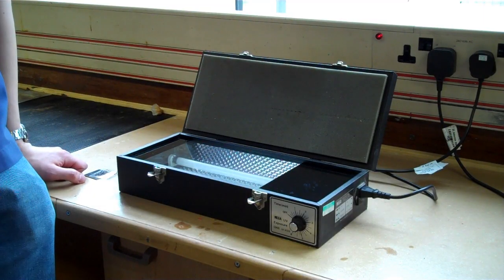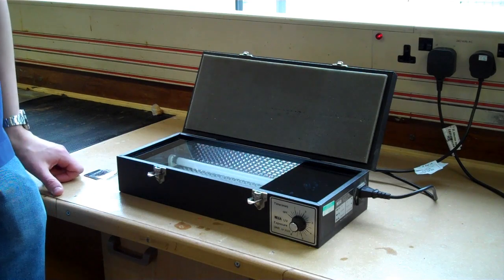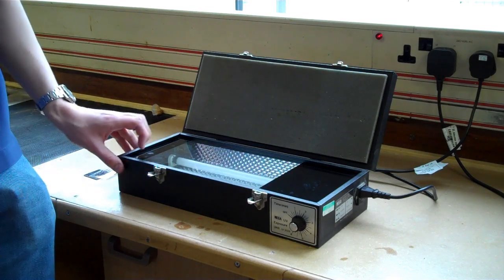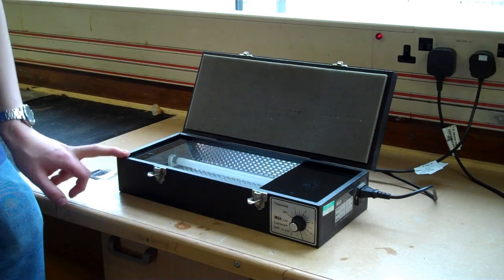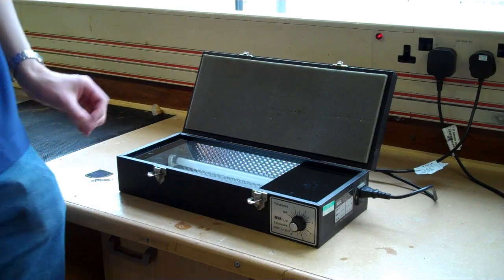Hey YouTube and welcome to part 5 of how to design, develop and manufacture a printed circuit board. This is a UV light box which we're going to use to expose the printed circuit board.